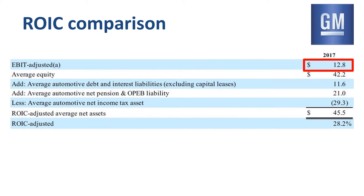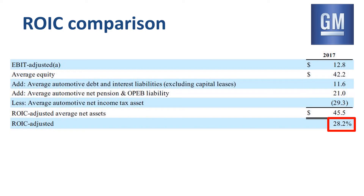For the denominator, GM starts with average equity and adjusts that to average net assets. This gets them to 28% ROIC adjusted as per the GM definition. This is different from the ROIC calculations of other companies, as the numerator is on a pre-tax and excluding unusual items basis, and the denominator is on a net assets basis.